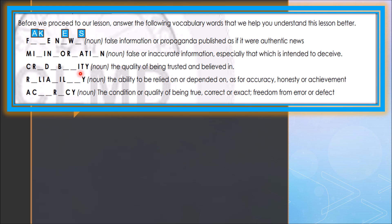The next vocabulary word is also a noun: the quality of being trusted and believed — it is credibility. And the next one is also a noun: the ability to be relied on or depended on as for accuracy, honesty, or achievement — it is reliability.